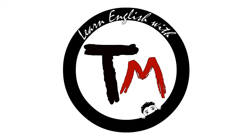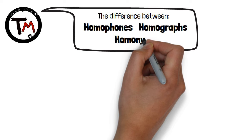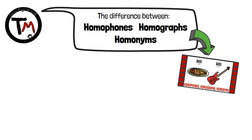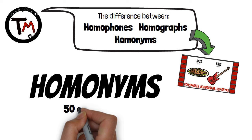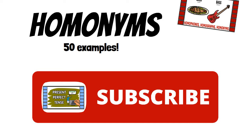Hello and welcome to Learn English with Tangmation. We've already explained the difference between homophones, homographs and homonyms — you can find it here. In this video, we'll focus on homonyms and we will show you 50 examples. Before we get started, don't forget to subscribe so you won't miss out on our new videos. Let's go!